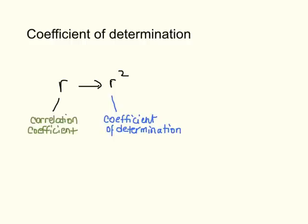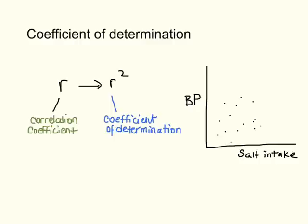So let's look at a visual of that. Let's go back to our correlation, our relationship between blood pressure and salt intake. And so we can put a bunch of dots here. We'll make this like a correlation of 0.4. So r equals 0.4. And so the r squared would just be 0.4 times 0.4, which equals 0.16.